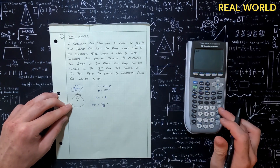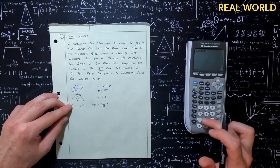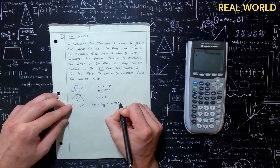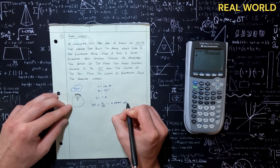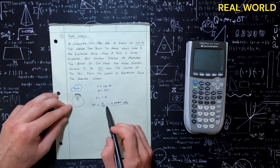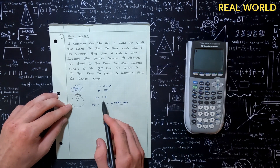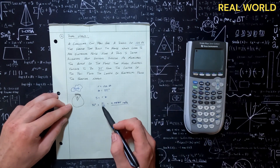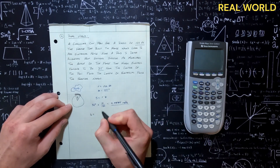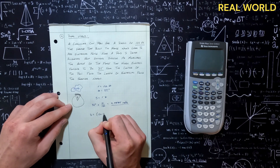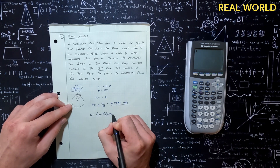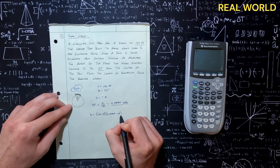So we do 32 times pi divided by 180, giving us 0.5585 radians. We have our radius of 120 feet and our theta. So S equals the radius of 120 feet times 0.5585 radians.